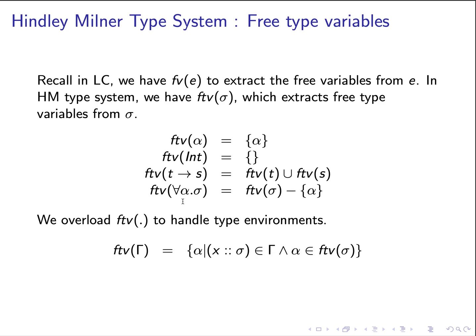The last case: when we apply free type variables to a type scheme, we first extract all free type variables from sigma and then remove or exclude the alpha introduced by that type scheme. This is analogous to lambda abstraction but at the level of types. We also overload this operation to handle type environments: applying ftv to gamma collects all free type variables found across all bindings in gamma, extracting the free type variables from each sigma.